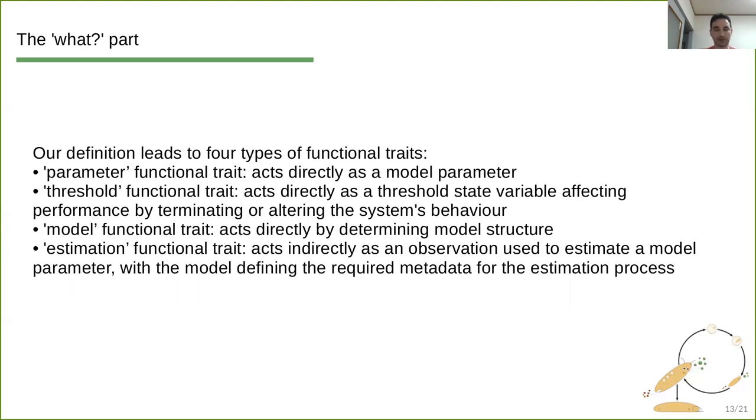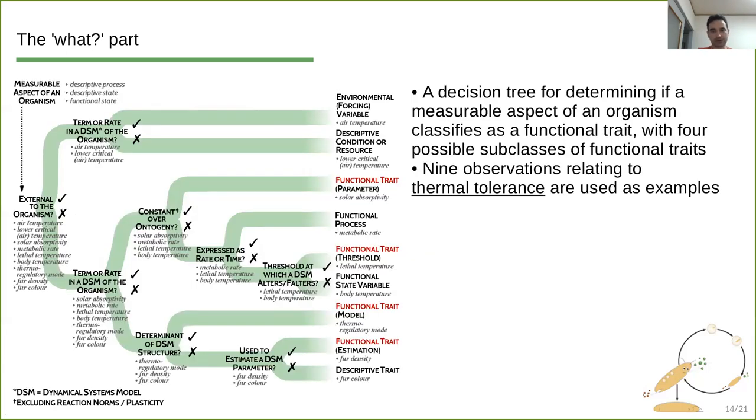So just going through an example here, we have a decision tree to determine whether something is a functional trait or not in our framework. And there are clearly delineated four possible subclasses of functional traits. And the example in particular pertains to thermal tolerance. So we have nine measurable aspects of an organism here, nine quantities or nine characteristics that we can somehow measure, make a record of them. And these are air temperature, lower critical air temperature, which also something that may not be clear, it's not clear immediately but will be clear when we work this example in more detail later. So solar absorptivity, metabolic rate, lethal temperature, body temperature, thermoregulatory mode, fur density and fur color.